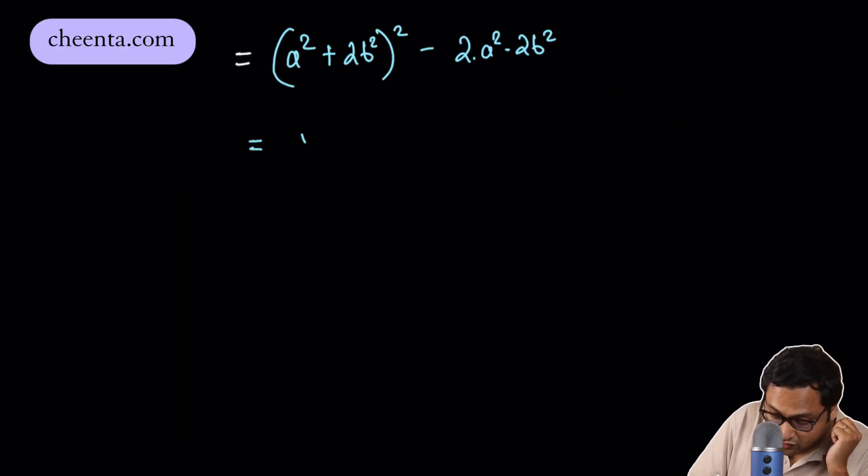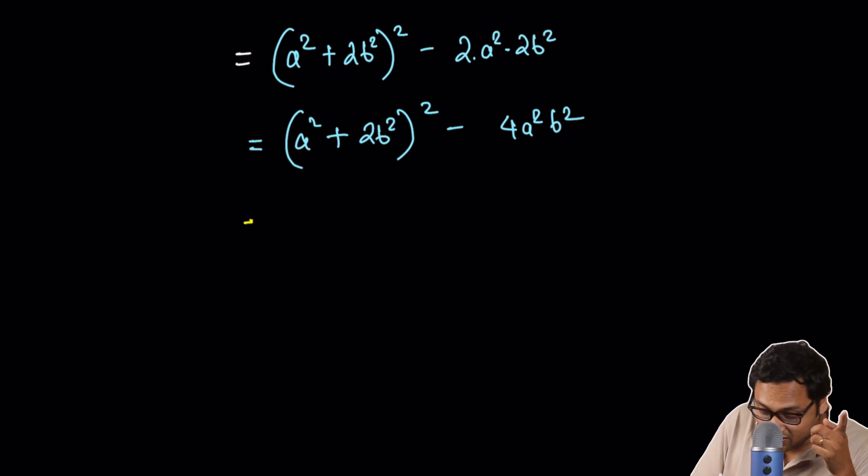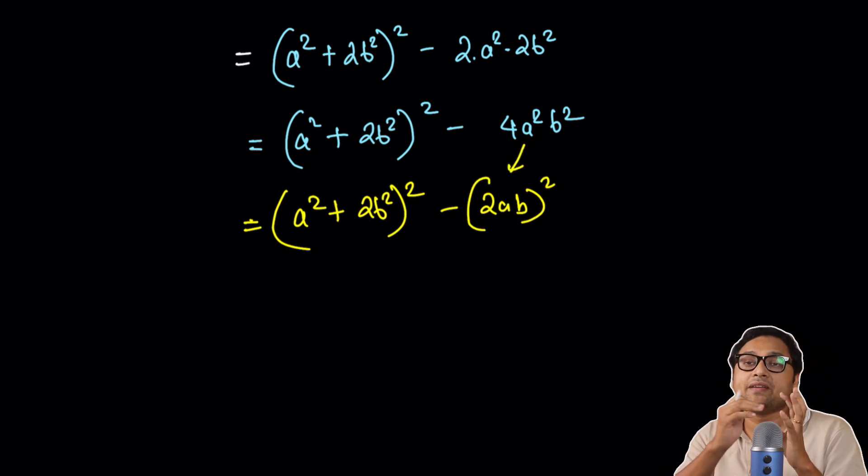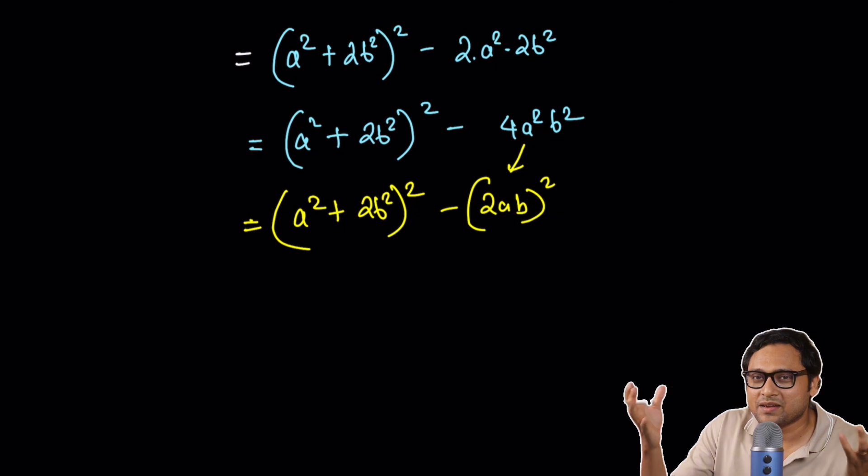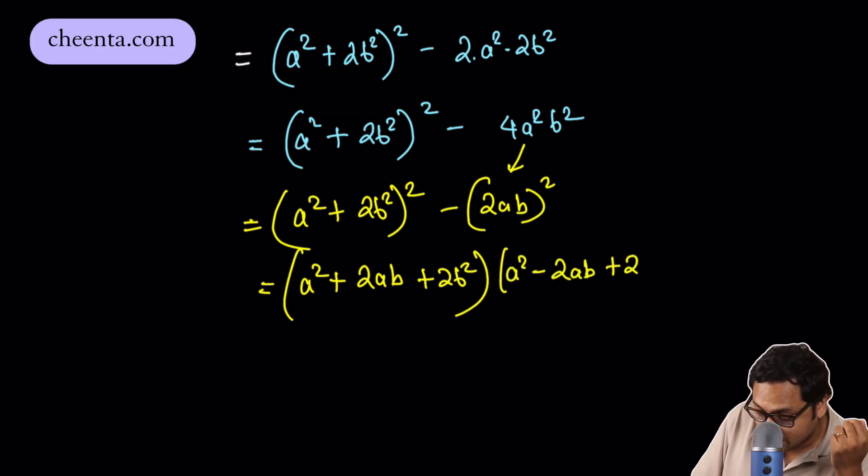So we are almost done. a square plus 2b square whole square minus 4a square b square. And now you see what's going on. a square plus 2b square whole square minus 2ab whole square because this is 2ab whole square. Now we have difference of two squares and we can factorize. So this is simply a square plus 2ab plus 2b square times a square minus 2ab plus 2b square.